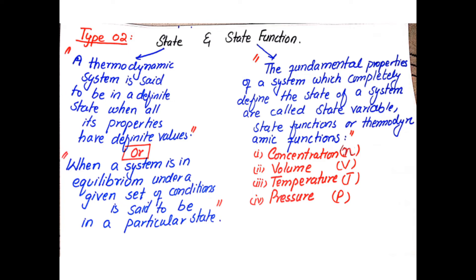The second type of thermodynamic terms is state and state function. A thermodynamic system is said to be in a definite state when all of its properties have definite values.